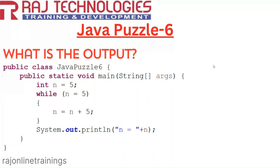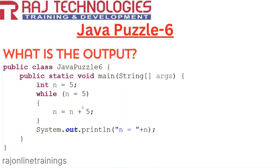In puzzle 6 we have taken a class JavaPuzzle6 with a main method. We have declared the variable integer n equal to 5 and we are checking the condition. We go with a while loop: while n equals 5, and if this condition is true it enters the loop. Inside, we have the expression n equal to n plus 5, and once we come out of the loop we print the value of n.